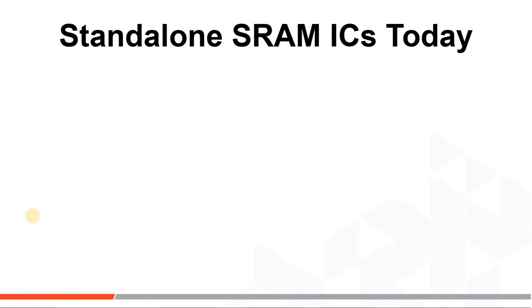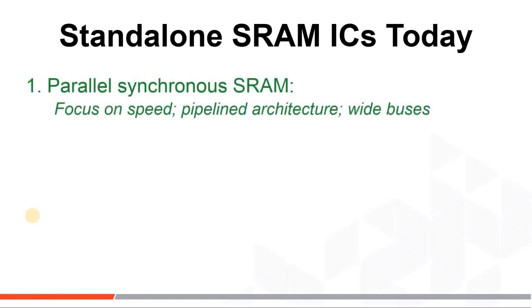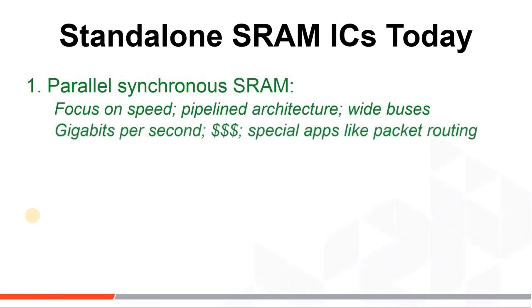For the surviving standalone SRAM integrated circuits, the differences come primarily in the interfaces. Parallel synchronous SRAM focuses on blazing speed. They are pipelined with edge clocks on the inputs and outputs. Speed is measured in gigabits per second. These are quite expensive and targeted at specialty applications like internet packet routing.